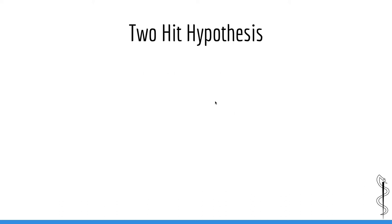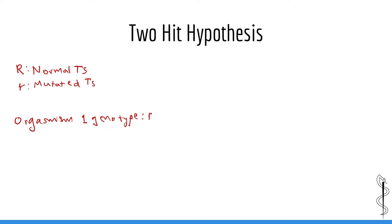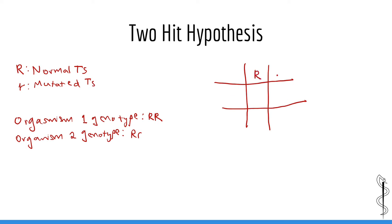Another important implication of the two-hit hypothesis is that it explains why most inherited cancer syndromes are inherited as autosomal dominant. Let's draw this out using Punnett squares. Take for example tumor suppressor R, where the functional version is denoted as capital R and the non-functional mutated version is lowercase r. If an organism with genotype big R and little r mates with an organism with genotype capital R and capital R, we see that 50% of all offspring will inherit one copy of little r and big R — this is an autosomal dominant pattern of inheritance.